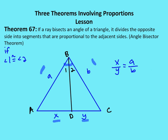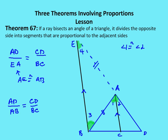Let's prove that theorem. We're going to redraw triangle ABD with ray AC, where angle 1 is congruent to angle 2 — that's given. Then we're going to extend a line from B that's parallel to AC. Let's call it BE, parallel to AC. We extend DA through A, and the point of intersection between line BE and DA extended is point E.